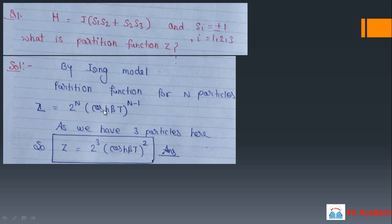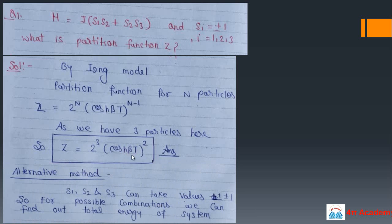By the Ising model, the partition function for n particles is Z = 2^n × cosh(βJ)^(n−1). Here we have n = 3 particles, so the partition function is Z = 2³ × cosh²(βJ), which is 8cosh²(βt). This is the answer using the Ising model formula.